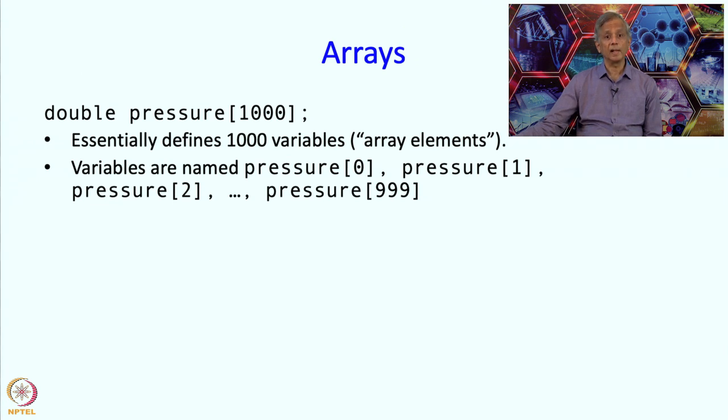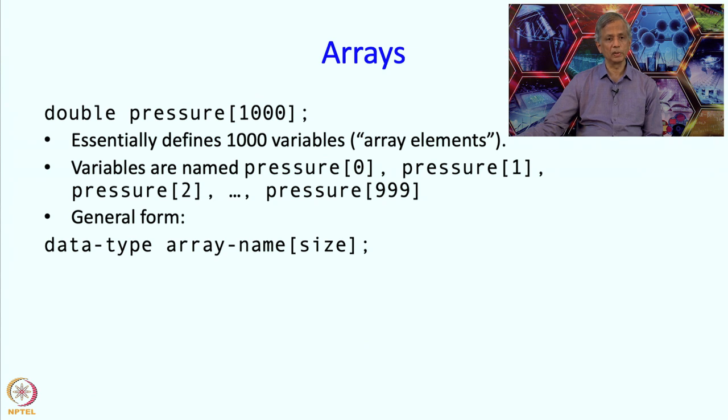Notice that the numbering starts at 0 and not at 1. So the variables are not named pressure1 through pressure1000 but they are named pressure0 through pressure999, all within the indices, the 0 through 999 are in square brackets. The general form is the type of the element, data type, array name and the size. The size is also called the length.